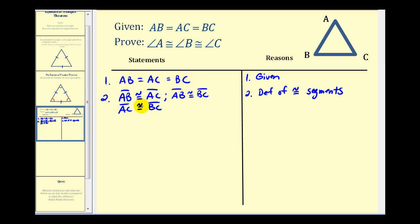So if all of these sides are congruent, then triangle ABC would be an equilateral triangle. And this is by definition of equilateral triangles.